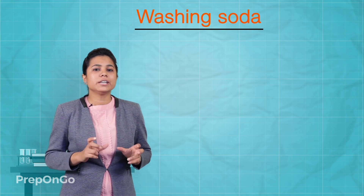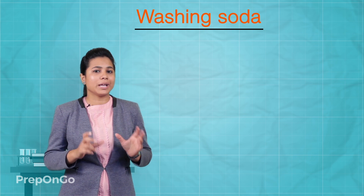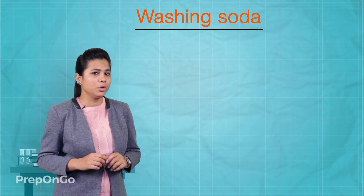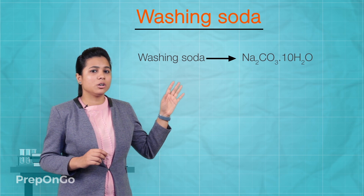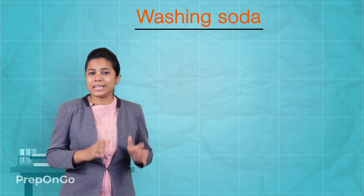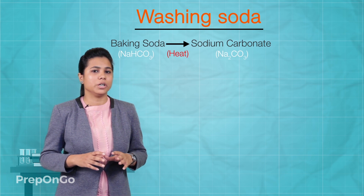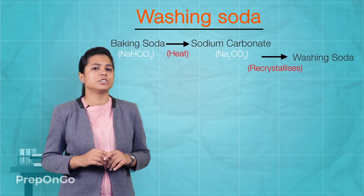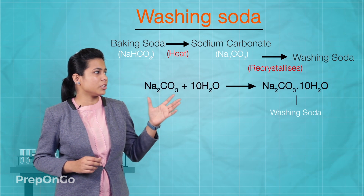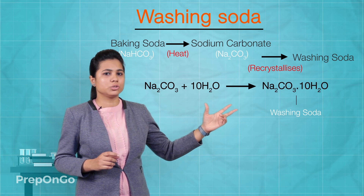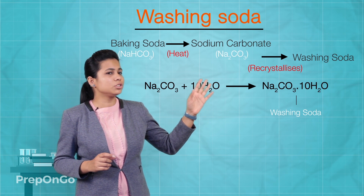The third salt is washing soda. Another chemical formed by the use of sodium chloride is washing soda, which has the formula sodium carbonate dot 10 molecules of water (Na₂CO₃·10H₂O). When we heat baking soda, we obtain sodium carbonate, and this sodium carbonate when recrystallized forms washing soda. The reaction shows sodium carbonate reacting with water to form washing soda with 10 molecules of water.